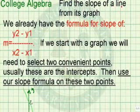We now want to find the slope of a line from its graph. We already have the formula for slope: m equals y2 minus y1 over x2 minus x1. If we start with the graph, we will need to select two convenient points so that we can fill in the formula. Usually these are going to be the y and x-intercepts. Then we use our slope formula on these two points.